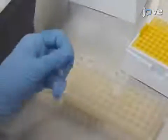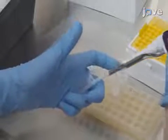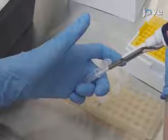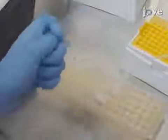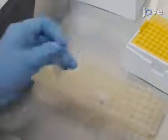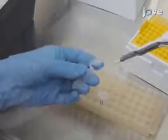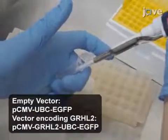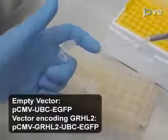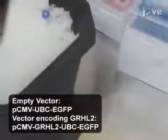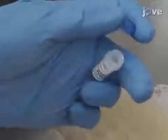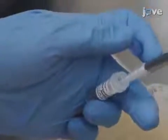Next, in separate tubes containing 200 microliters of serum-free medium with 1.8 micrograms of P-delta-8.9 and 0.2 micrograms of PCMV-VSVG helper plasmids, dilute two micrograms of the empty vector and two micrograms of the vector containing GRHL2. In another tube, dilute four microliters of a lipid-based transfection reagent in 200 microliters of serum-free medium per transfection.